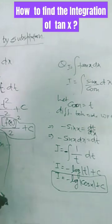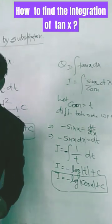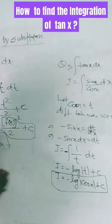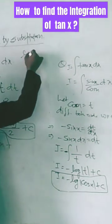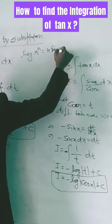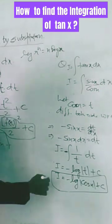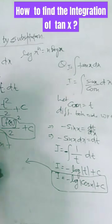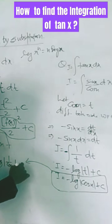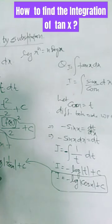We can write this in another form. We know the formula of logarithm that log x to the power n is equal to n log x. So see here, can we write this as I equals log mod 1 by cos x plus c?